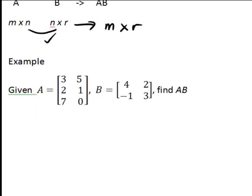So let's have a look at an example. Consider matrix A: 3, 5, 2, 1, 7, 0. This matrix has three rows and two columns, hence that is a 3 by 2 matrix.